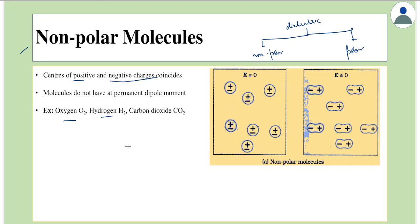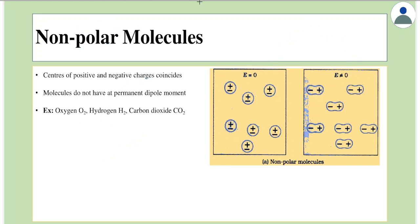These molecules are called nonpolar molecules. Since we do not find any poles — meaning either positive or negative charge — these molecules will not have a permanent dipole moment. Recall that dipole moment is given as q into 2a; since these molecules do not have any poles, this would be zero. Examples of nonpolar molecules are oxygen, hydrogen, and carbon dioxide. These nonpolar molecules are represented by a symbol where the center of positive and negative charge coincides, which happens when there is equal sharing of electrons.